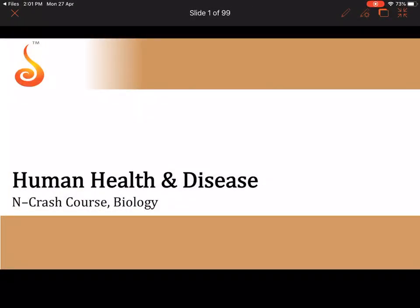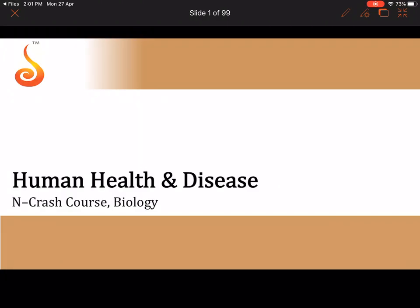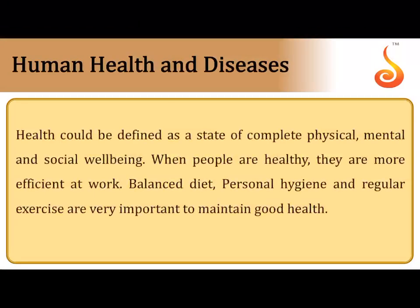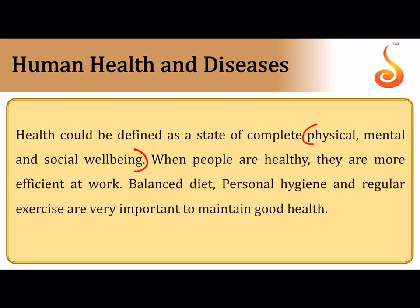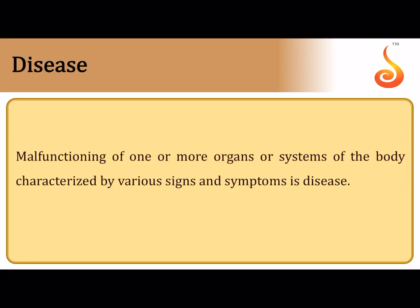Welcome to NEET crash course. We will be discussing the synopsis of the chapter Human Health and Disease. Health is defined as a complete state of physical, mental, and social well-being — not just feeling physically well, but also mental wellness and social interaction. It can be brought forth by balanced diet, personal hygiene, and regular exercise.